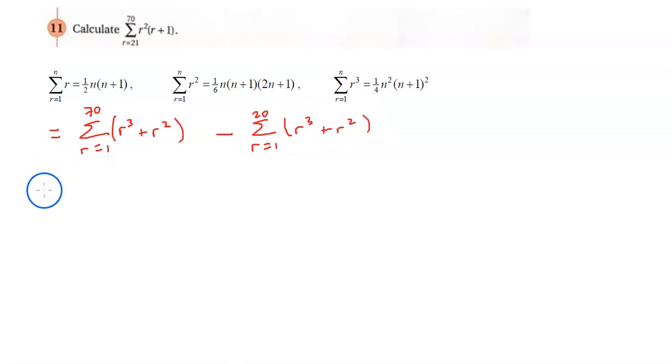And then from here we just use the distribution of series to write it as the sum from r equals 1 to 70 of r cubed plus the sum from r equals 1 to 70 of r squared, and then minus the sum from r equals 1 to 20 of r cubed and minus the sum from r equals 1 to 20 of r squared.